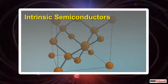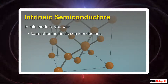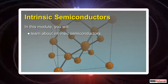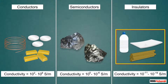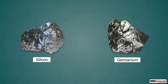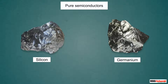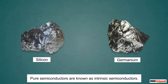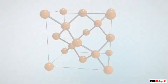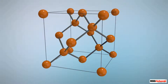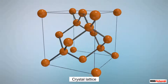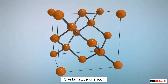In this module you will learn about intrinsic semiconductors. Semiconductors are materials with conductivities lying between conductors and insulators, with silicon or germanium most commonly used. These pure semiconductors occur naturally and are known as intrinsic semiconductors. The atoms of intrinsic semiconductors are closely grouped together in a crystalline pattern called a crystal lattice.